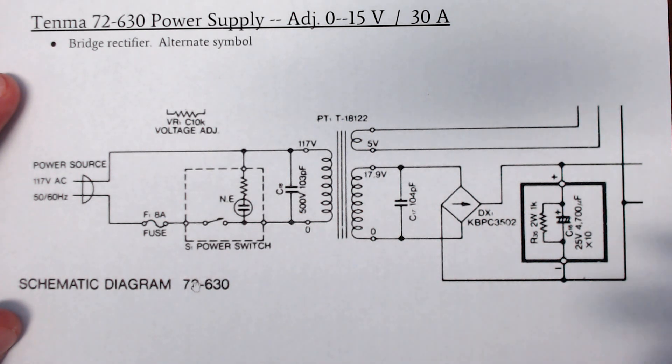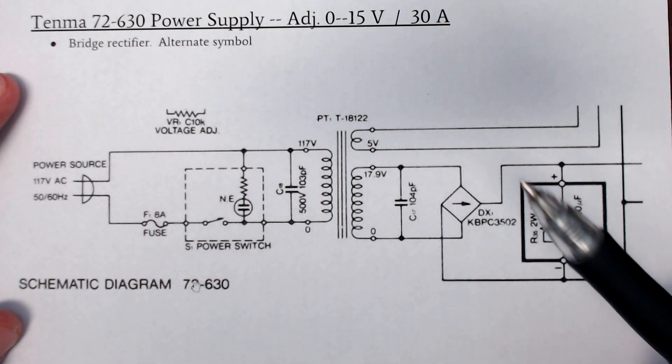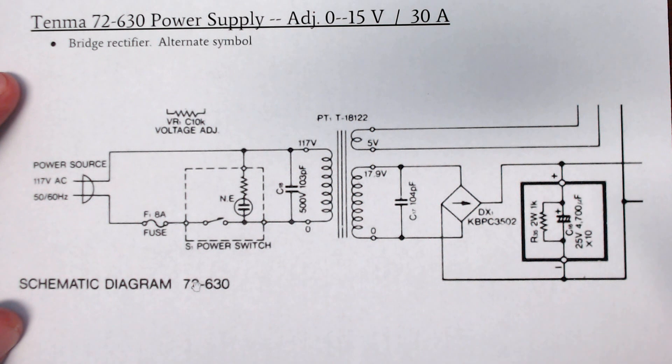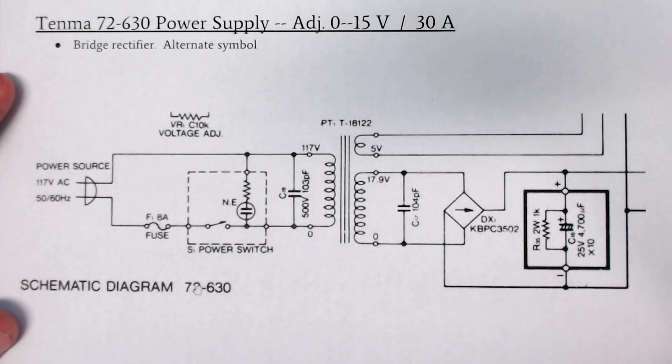Okay, here's looking at an alternative symbol for a bridge rectifier. This happens to be in a Tenma 72-630 power supply, 30 amp output, adjustable, 0 to 15 volts.